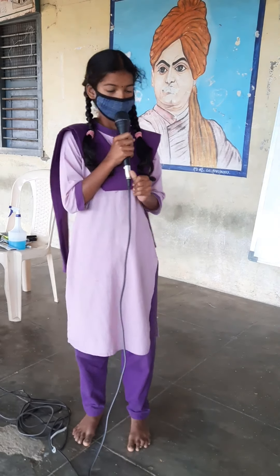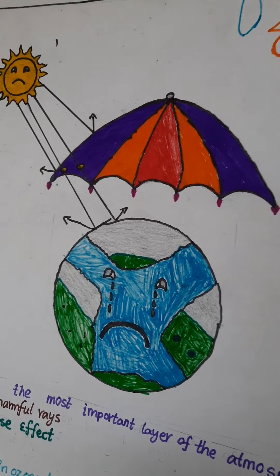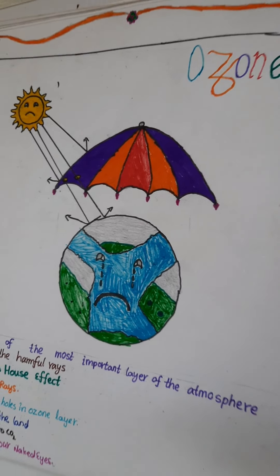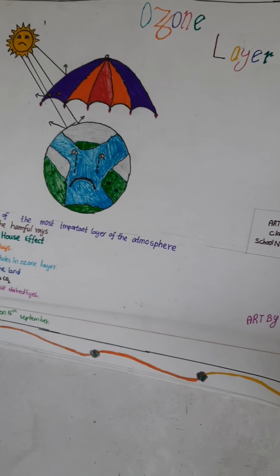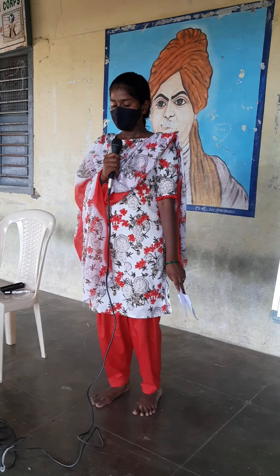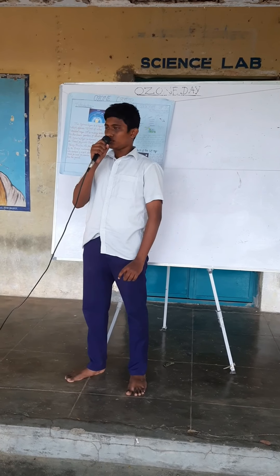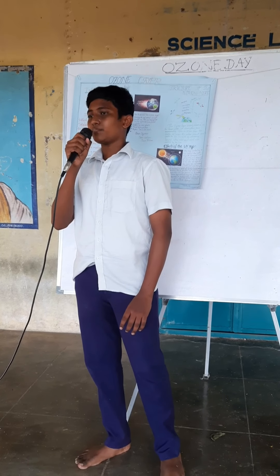I am studying in 7th class. The ozone layer is one of the most important layers in the atmosphere. It protects the earth from all harmful rays and is also useful for the greenhouse effect. It protects us from ultraviolet rays. World Ozone Day is celebrated on 16th September every year; it was designated in 1994.